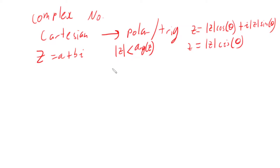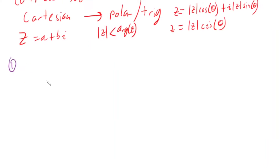So we're going to have a look at doing this for a few complex numbers. Our first one is going to be 4 minus 6i, so z equals 4 minus 6i, and I want to look at converting this to polar form or trig form.